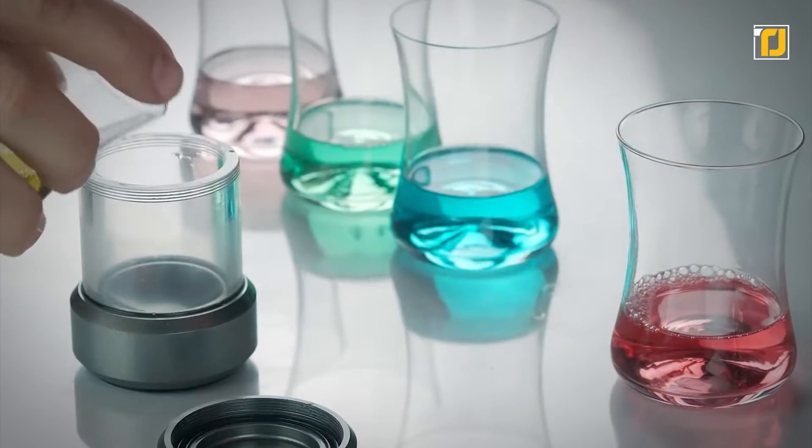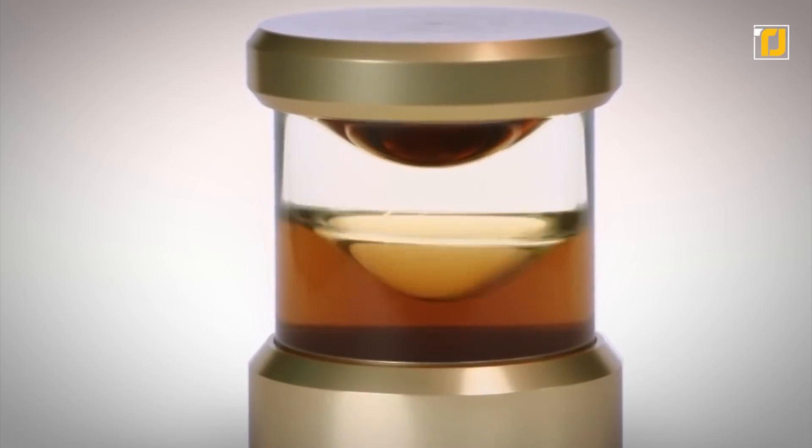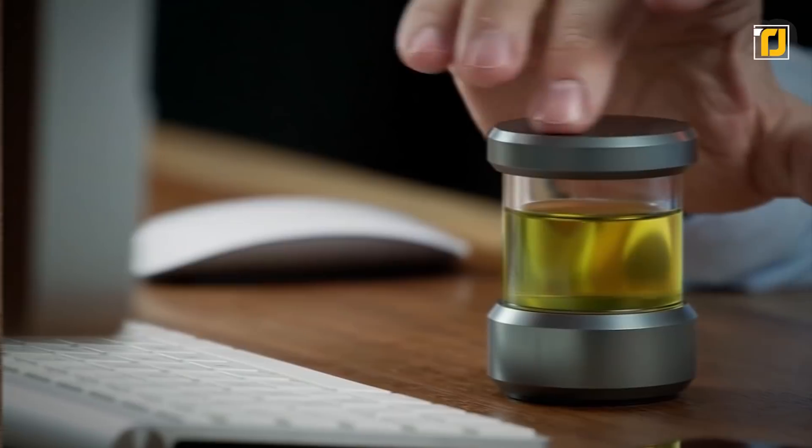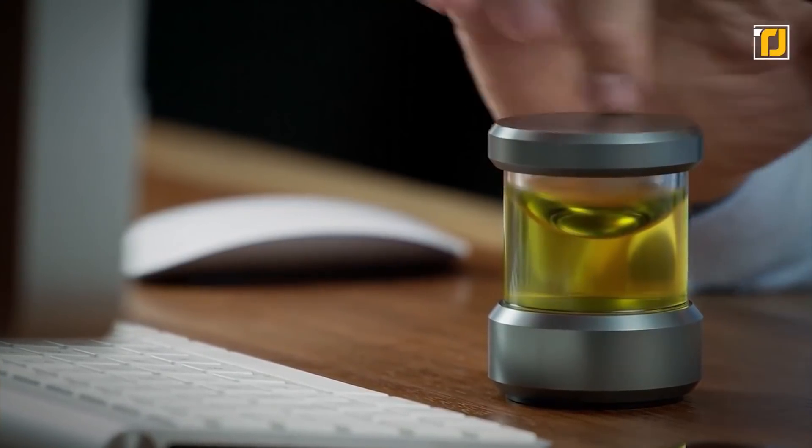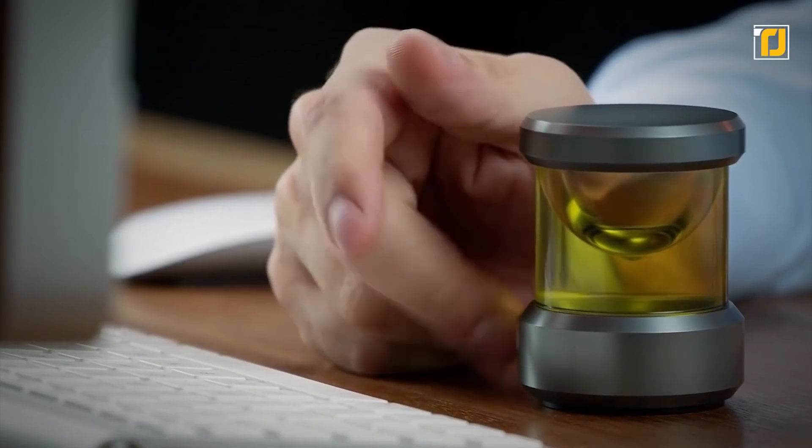You can put any liquid inside the anaphore and enjoy watching the whirlpool form when you spin it. Water will give you a pretty standard effect, but how about getting creative and adding things like gold dust in the liquid, or even two liquids of different densities to see what happens.